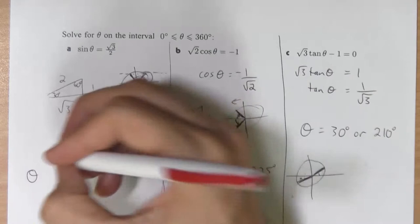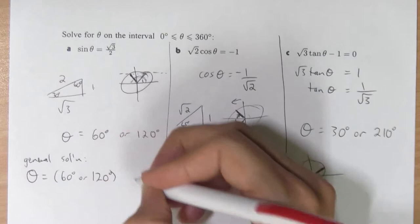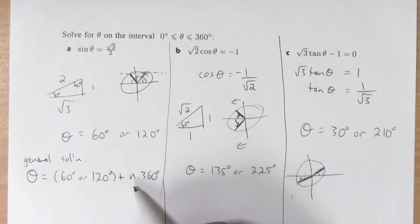My angle would be, I'm going to write general solution, my angle would be 60 or 120 plus some number of 360s, n times 360. That's called a general solution.